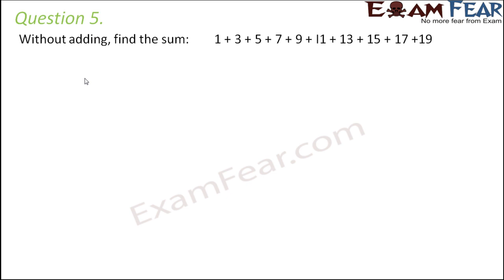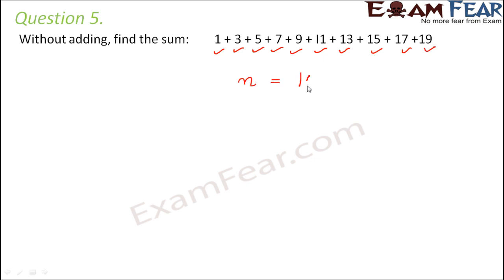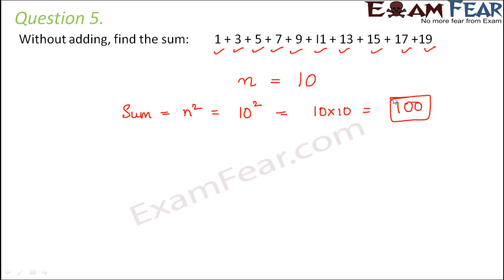Question number five: without adding, find the sum. The given numbers are consecutive odd numbers starting from one. Counting them, there are ten odd numbers. The sum of the first n odd numbers is always n squared, so the sum is 10 squared, which equals 100.